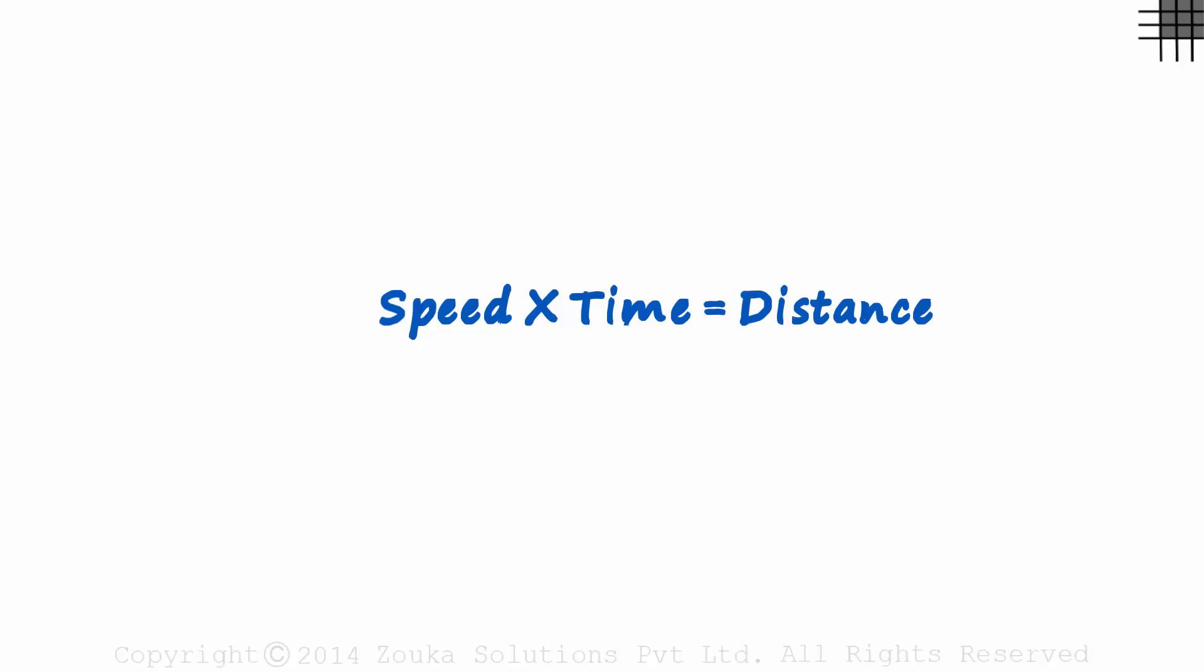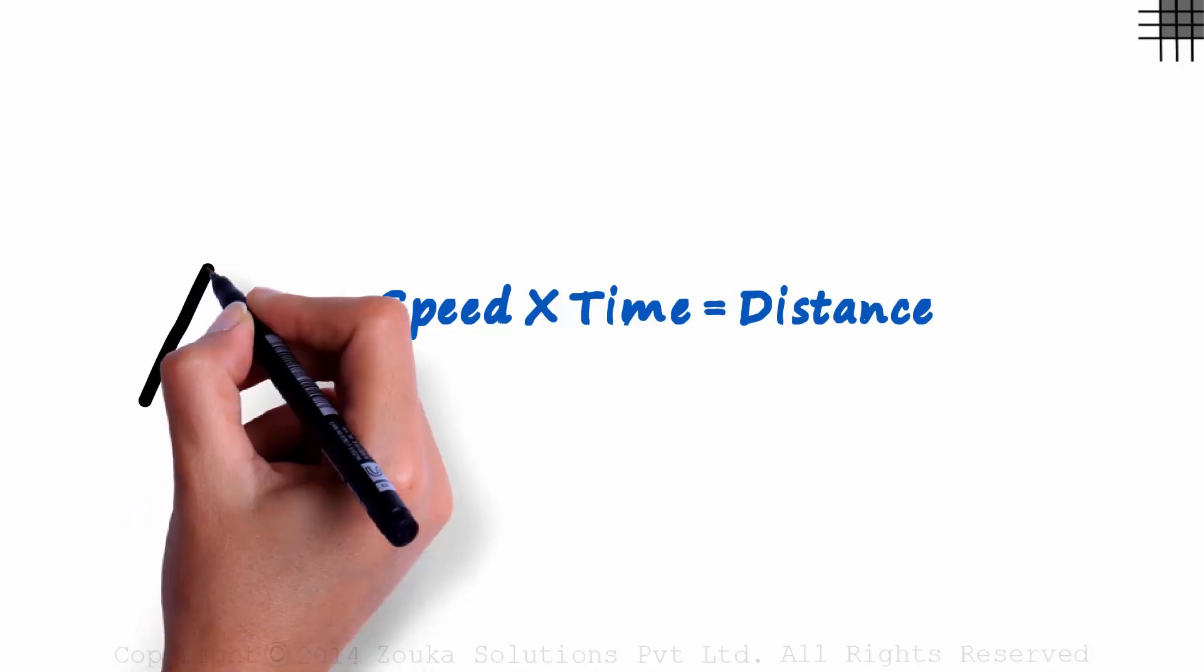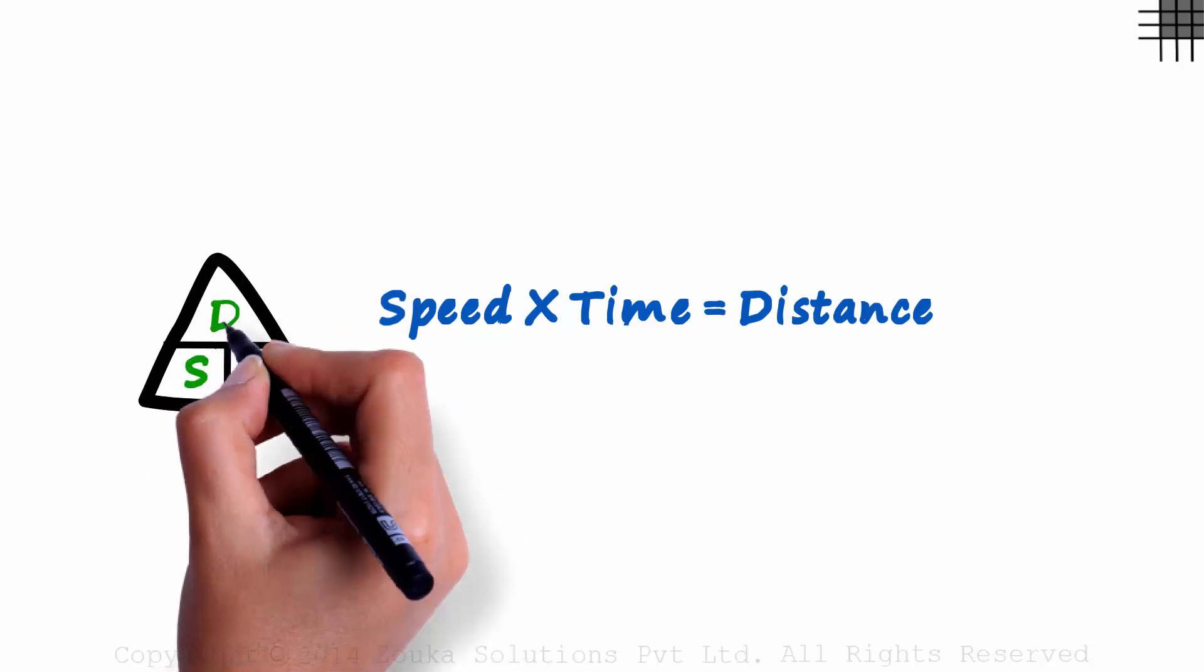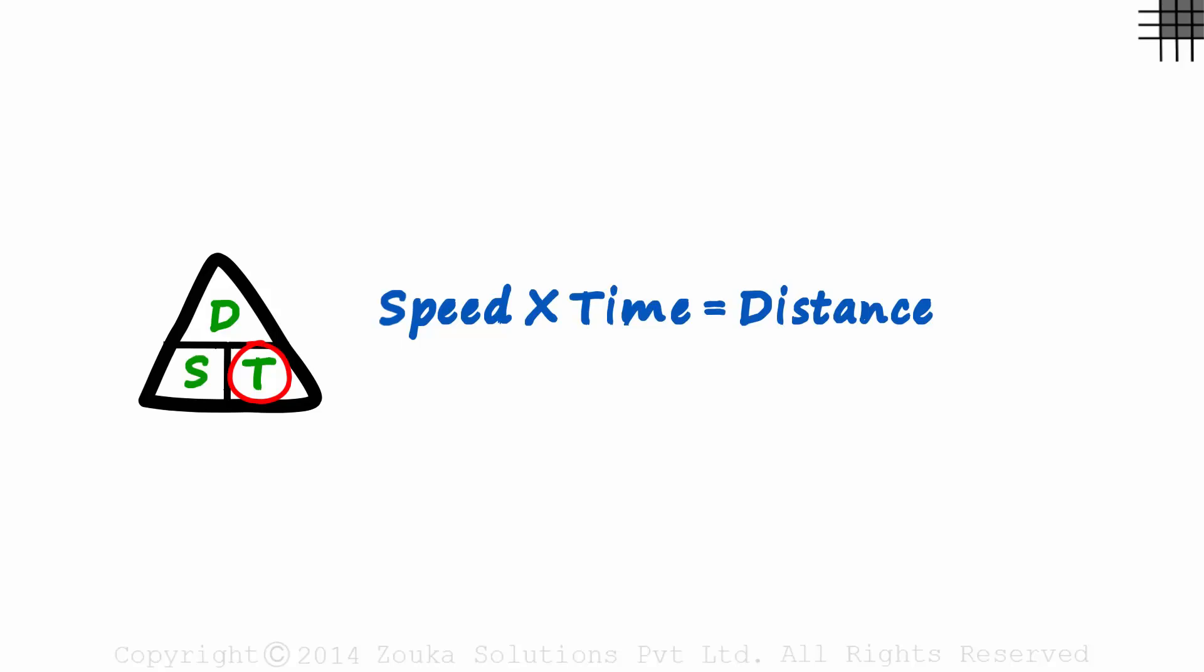A good way to remember this is by using this triangle. We have speed and time at the bottom and distance on top. If we want to find the time, it will be D over S. If speed, it will be D over T. If we want the distance, it will be S times T. Really simple, isn't it?